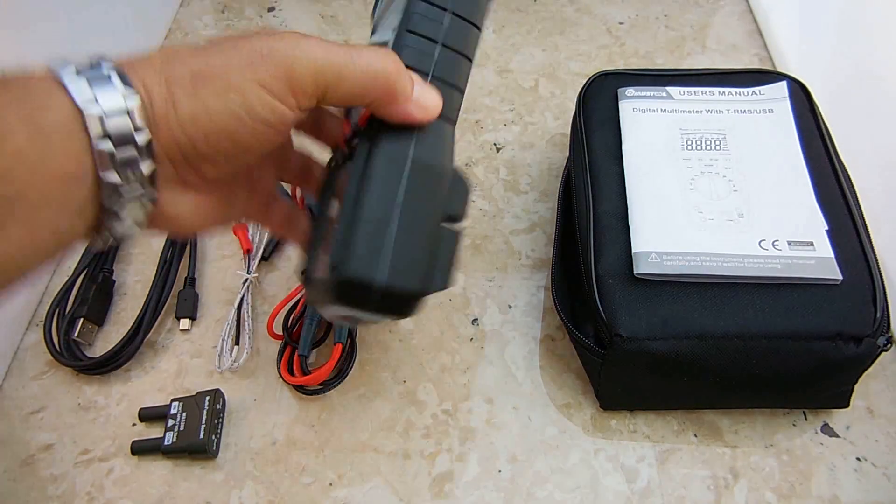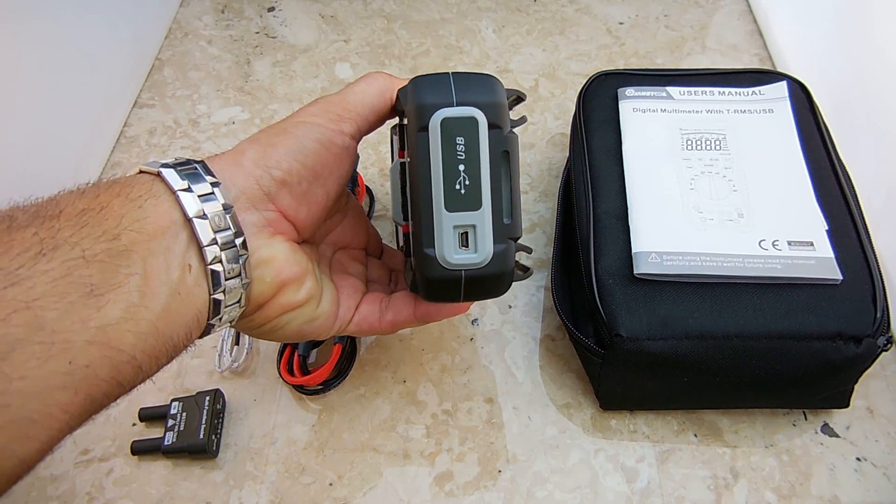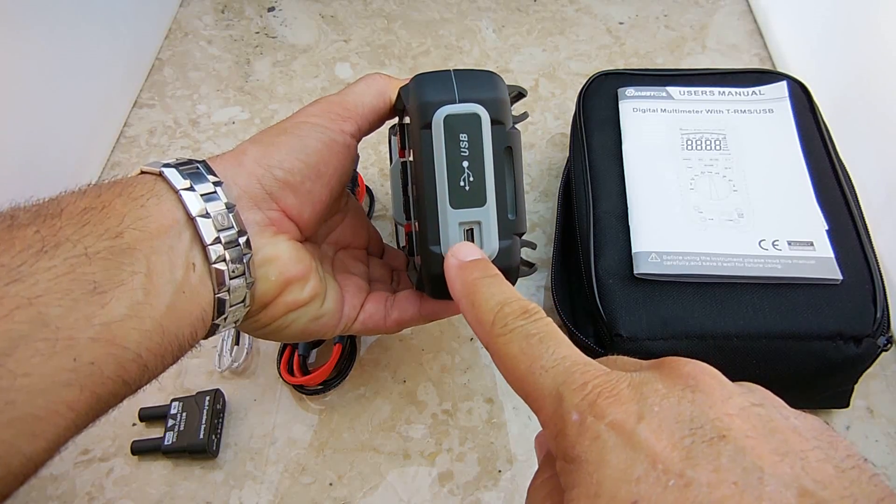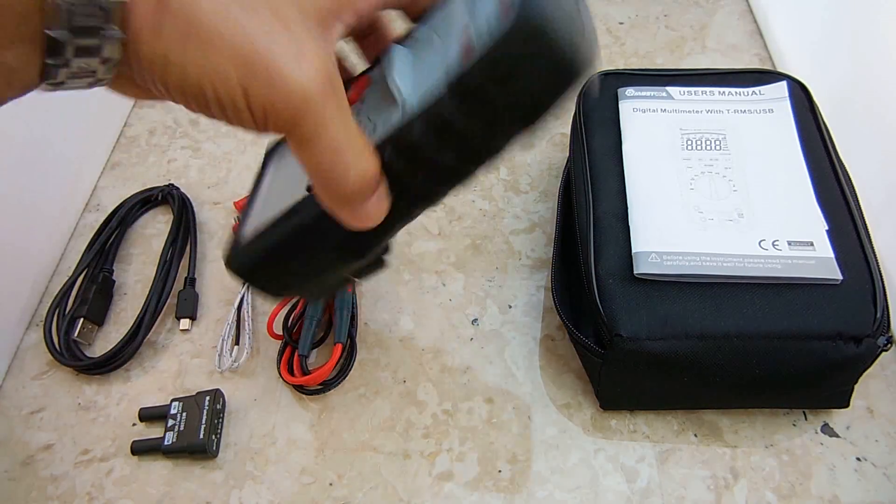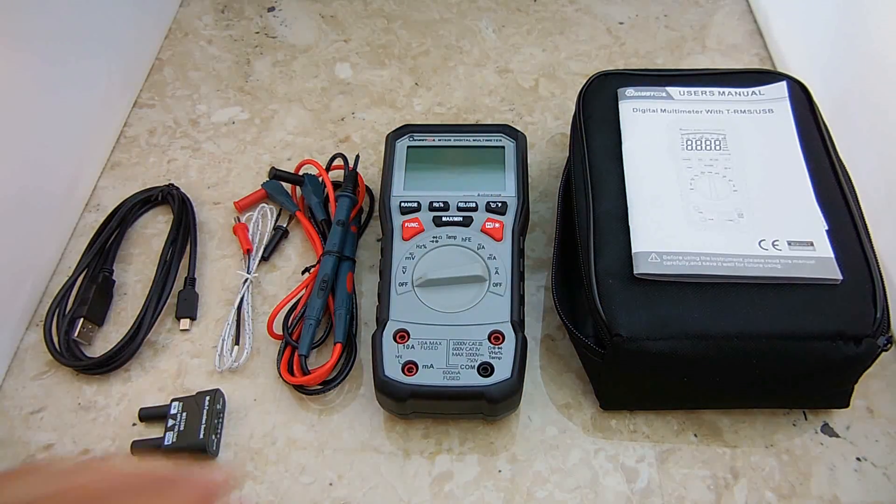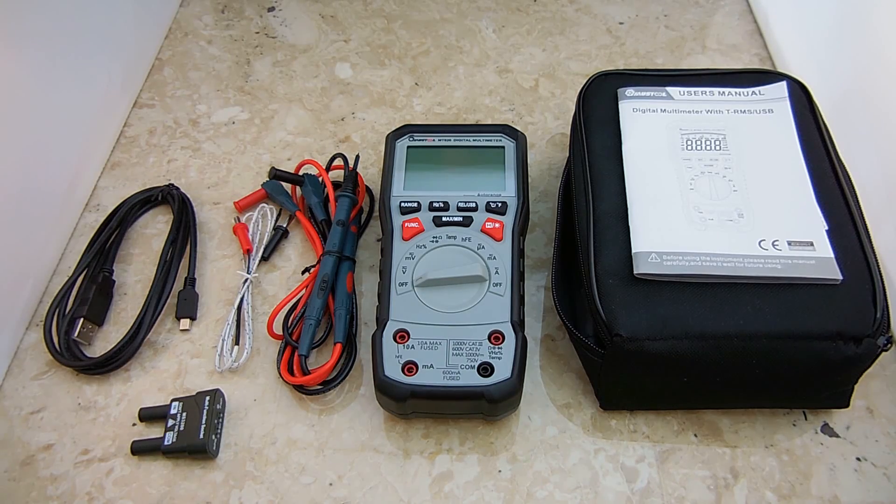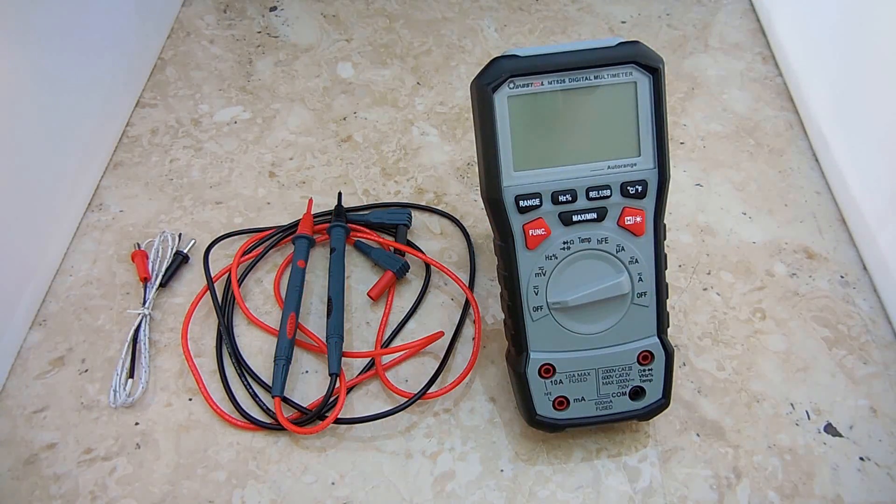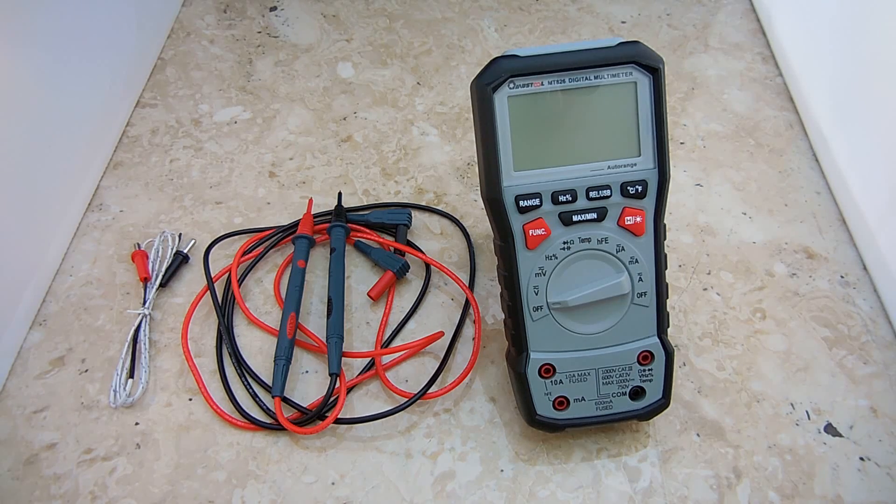Over here is the USB cable for connecting the digital multimeter to your personal computer. The way to do that is on this side of the unit, right here is the USB connection. Let's power up the unit and take a look at all the different features.